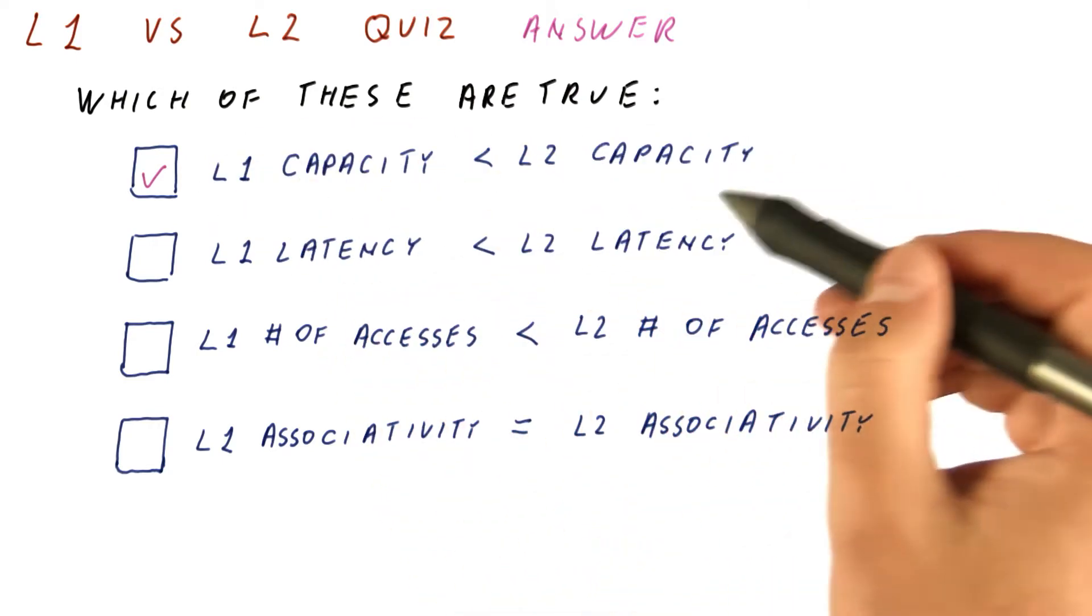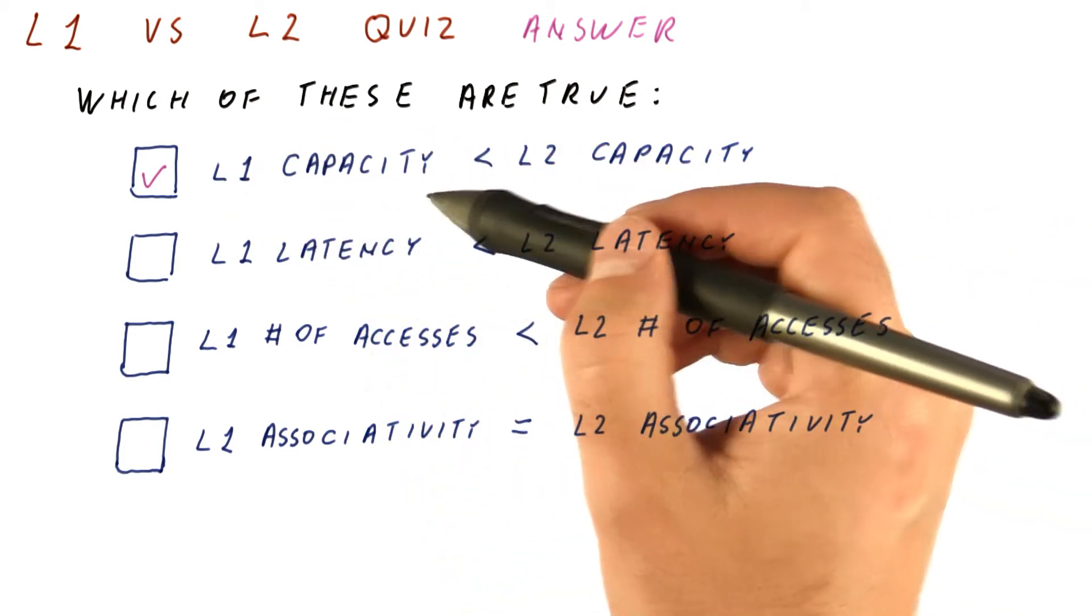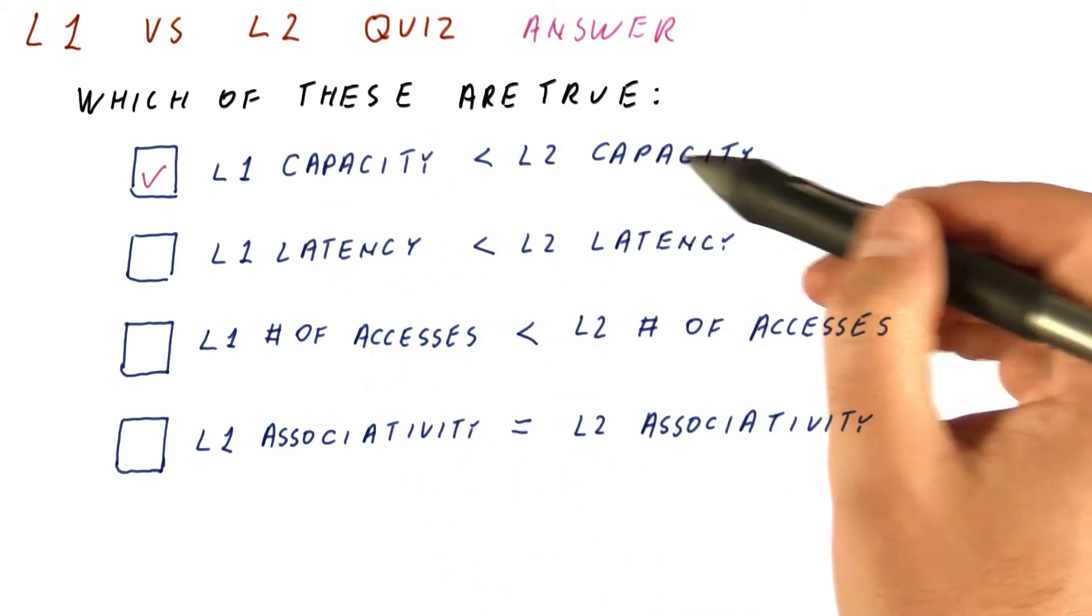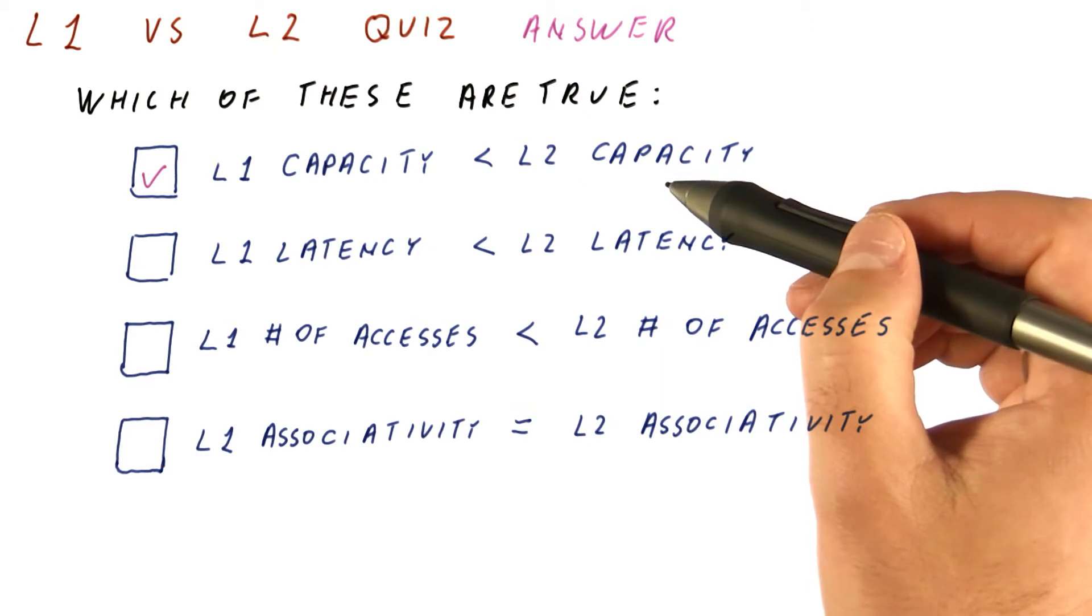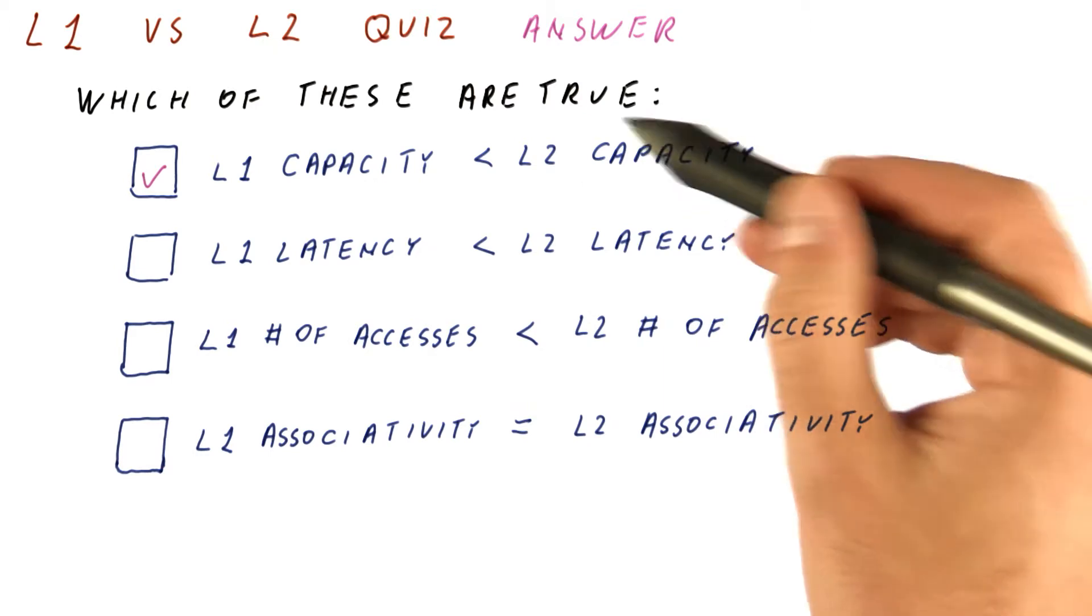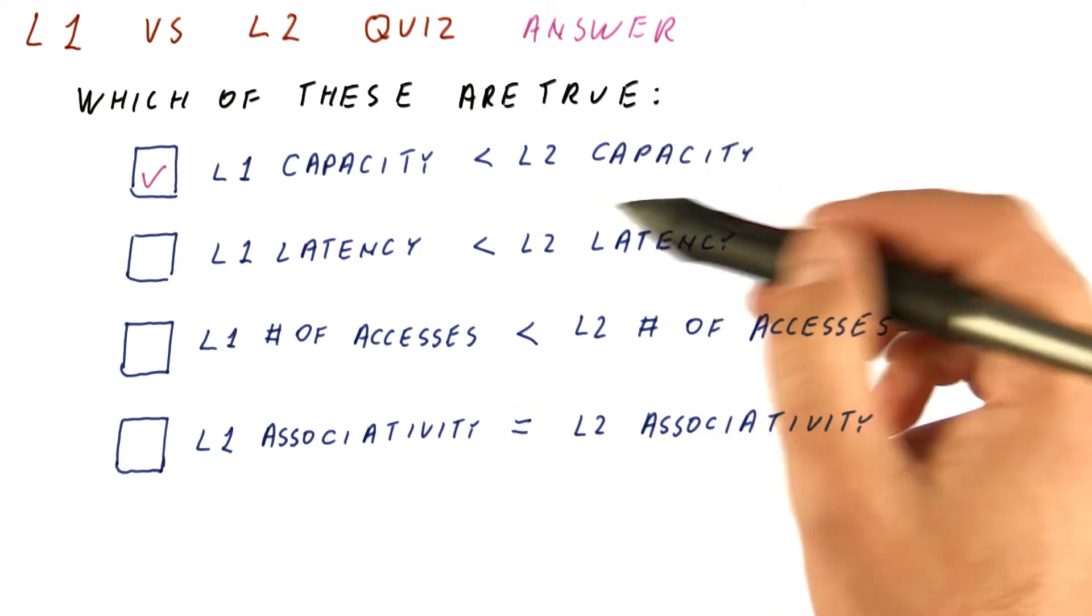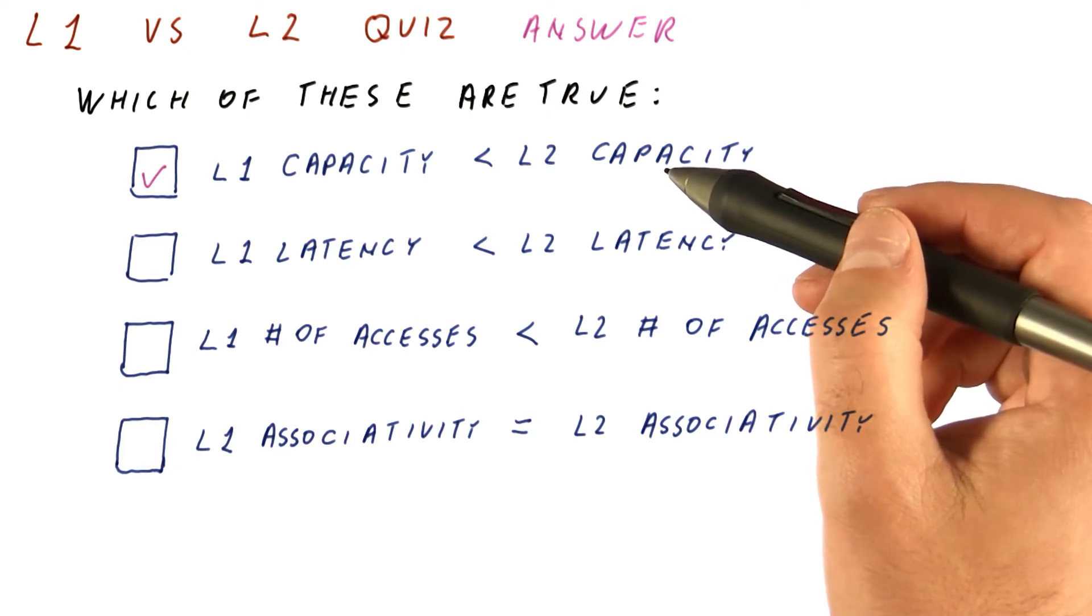So if L2 has the same or lower capacity than L1, then not many things that miss in L1 will actually be hits in L2. And we want the L2 to still have a lot of hits so that things don't go to even slower caches or even to memory.